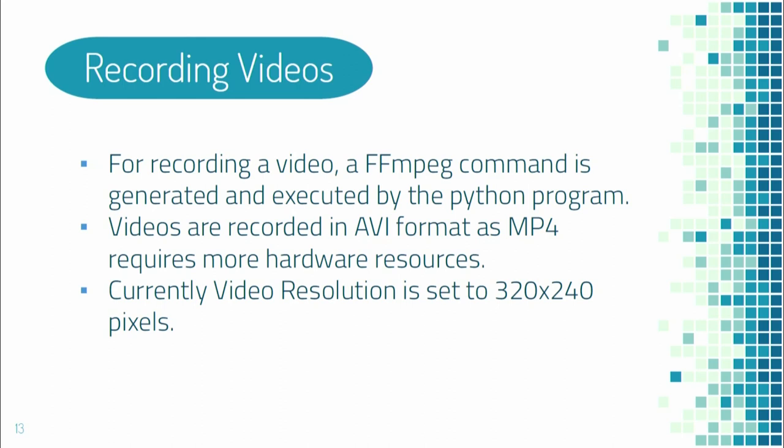The second module is for recording videos. The FFMPEG command is generated and executed using a Python program. Video is recorded in AVI format because MP4 requires more hardware resources. The resolution for the video is set to 320 by 240 pixels.